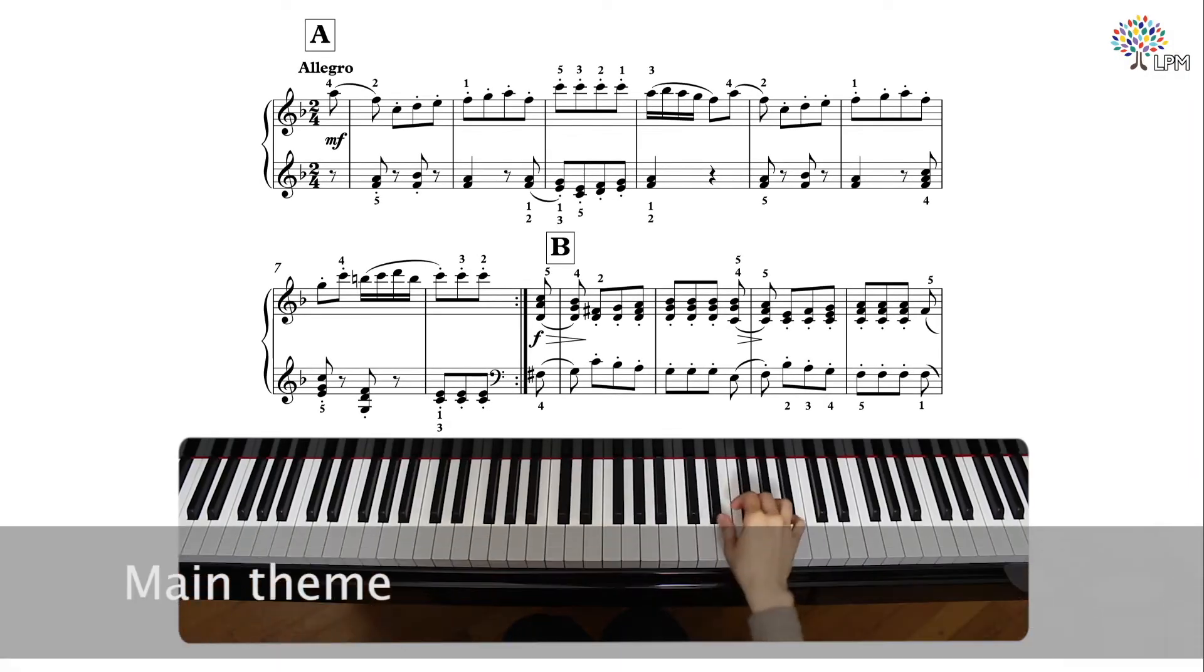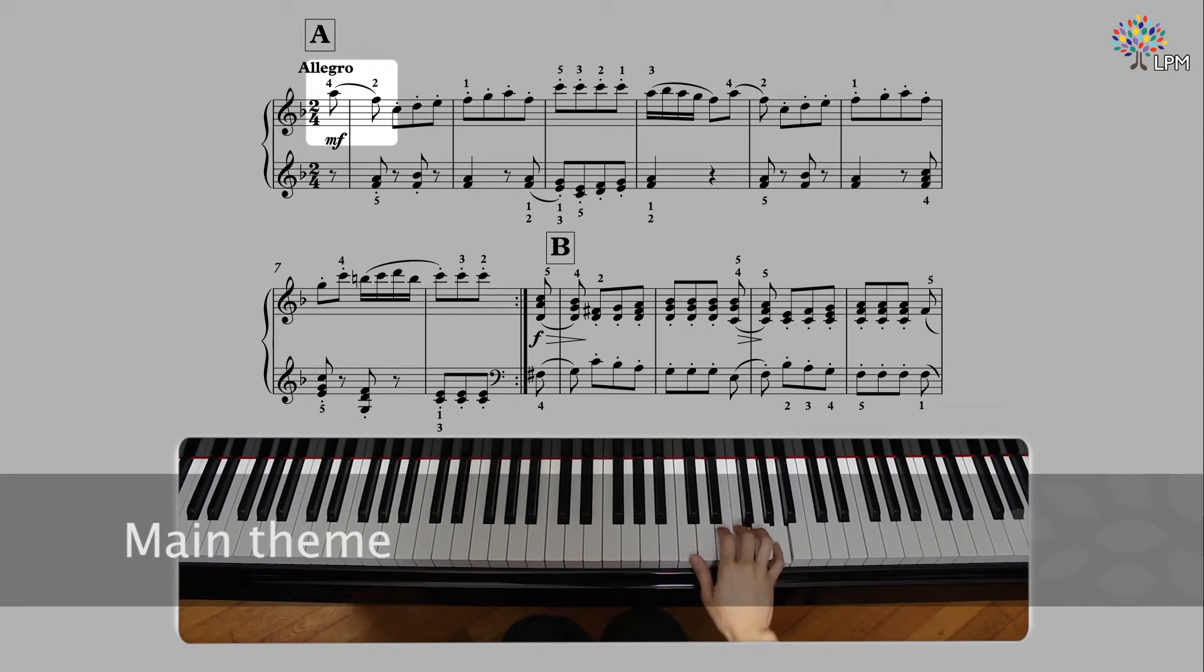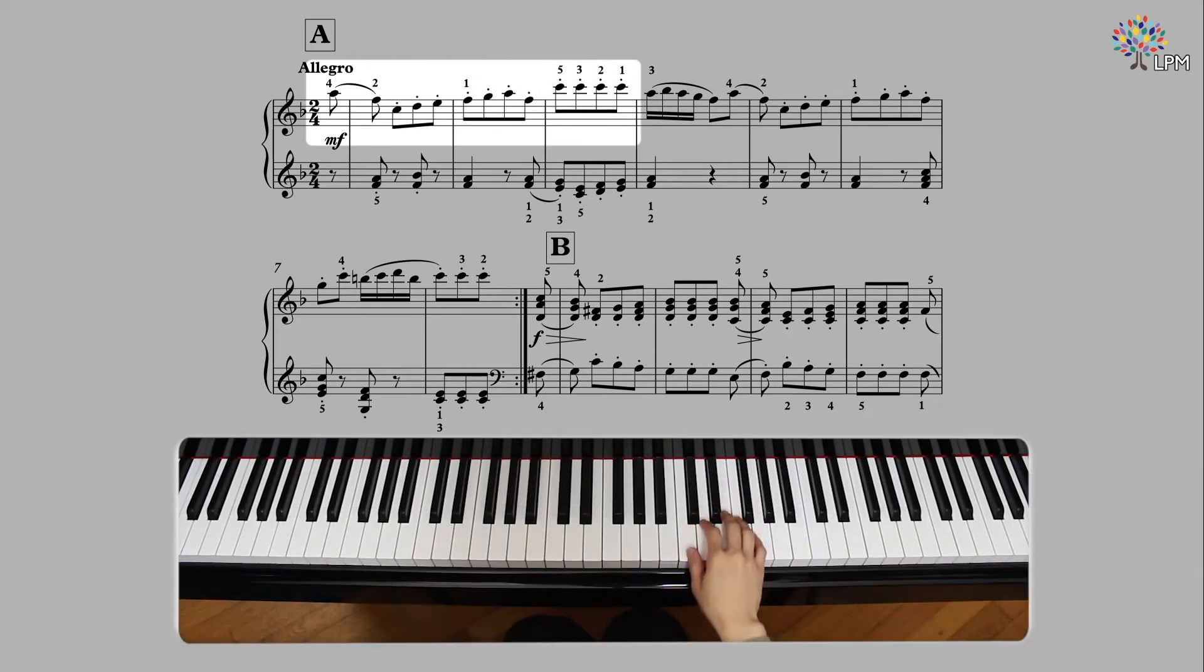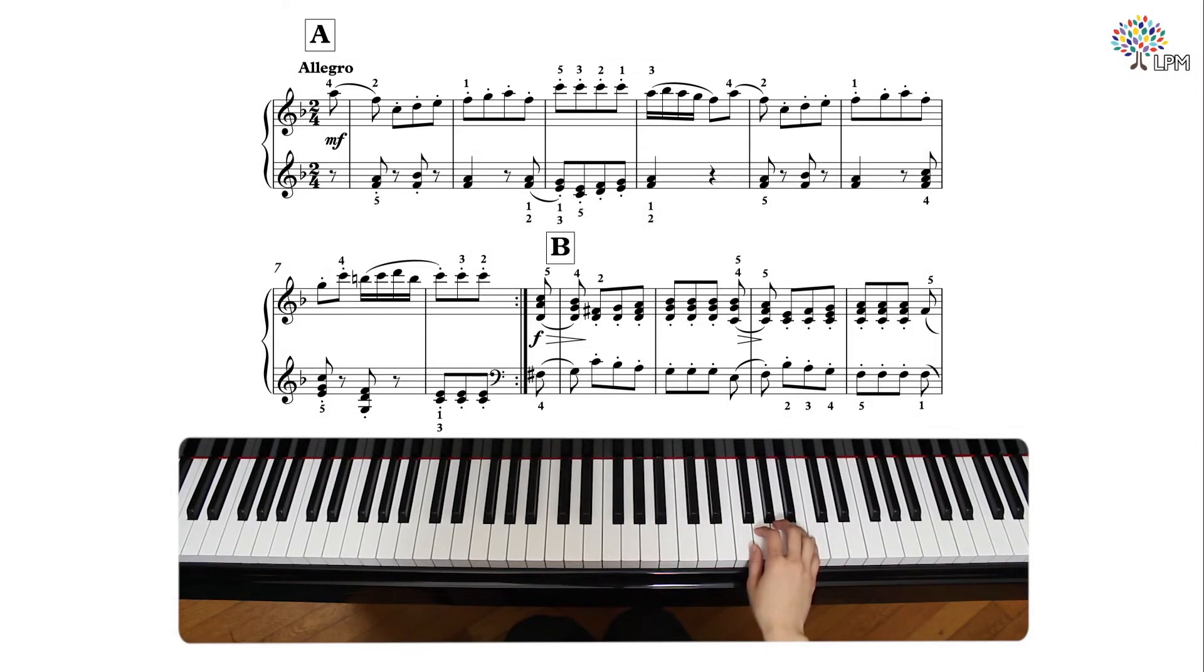The main theme consists of a two-note slur and a series of eighth notes and staccatos, followed by a twist and turn 16 note passage. Haydn was very fond of taking one theme and developing that theme in many different ways throughout the piece.